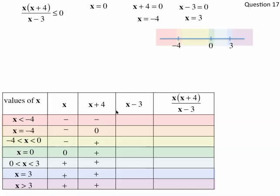For x minus 3: if x is less than negative 4, like negative 5, then negative 5 minus 3 is negative 8, so negative. If x is negative 4, you get negative 7, still negative. Between negative 4 and 0, like negative 1, negative 1 minus 3 is negative 4, negative. If x equals 0, then 0 minus 3 is negative 3, which is negative. Between 0 and 3, like 2, then 2 minus 3 is negative 1, negative. If x equals 3, then 3 minus 3 is 0. If x is greater than 3, like 4, then 4 minus 3 is positive. So all negatives, then 0, then positive.